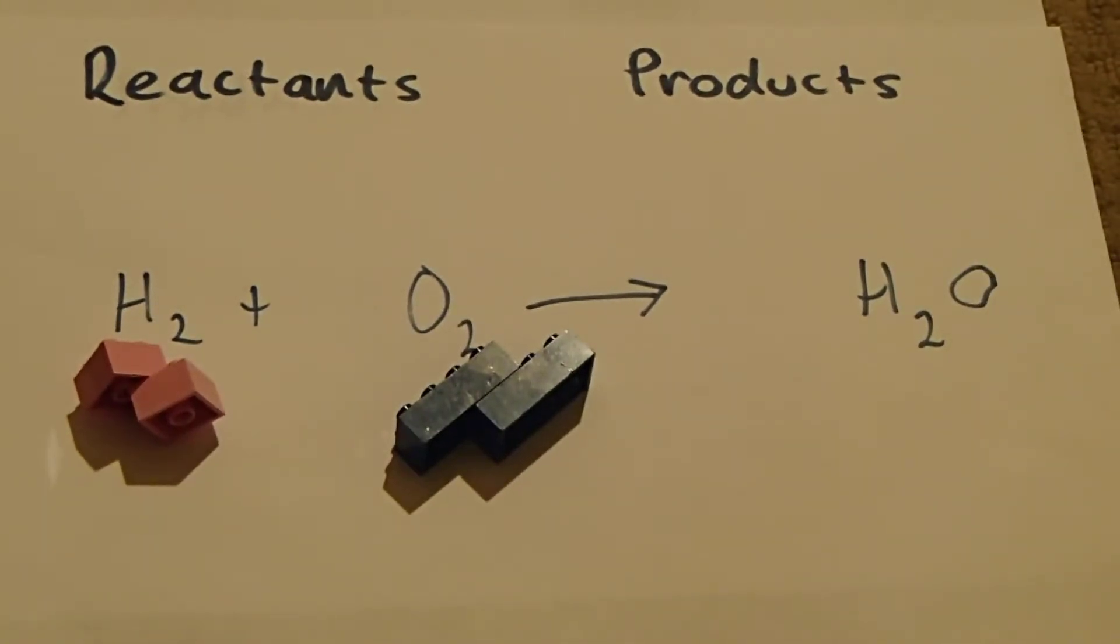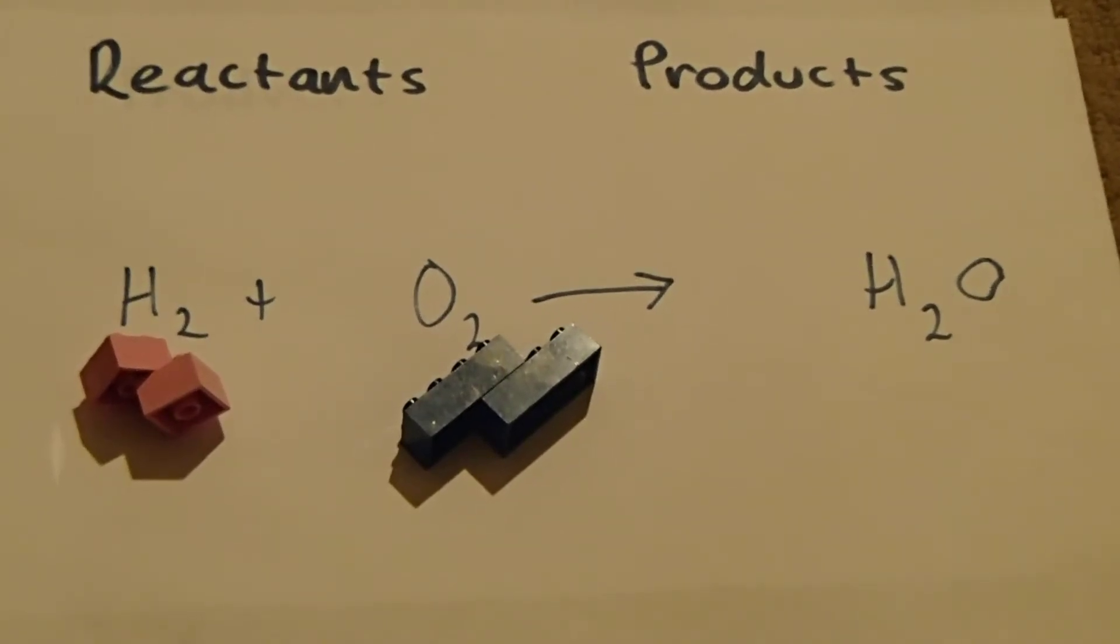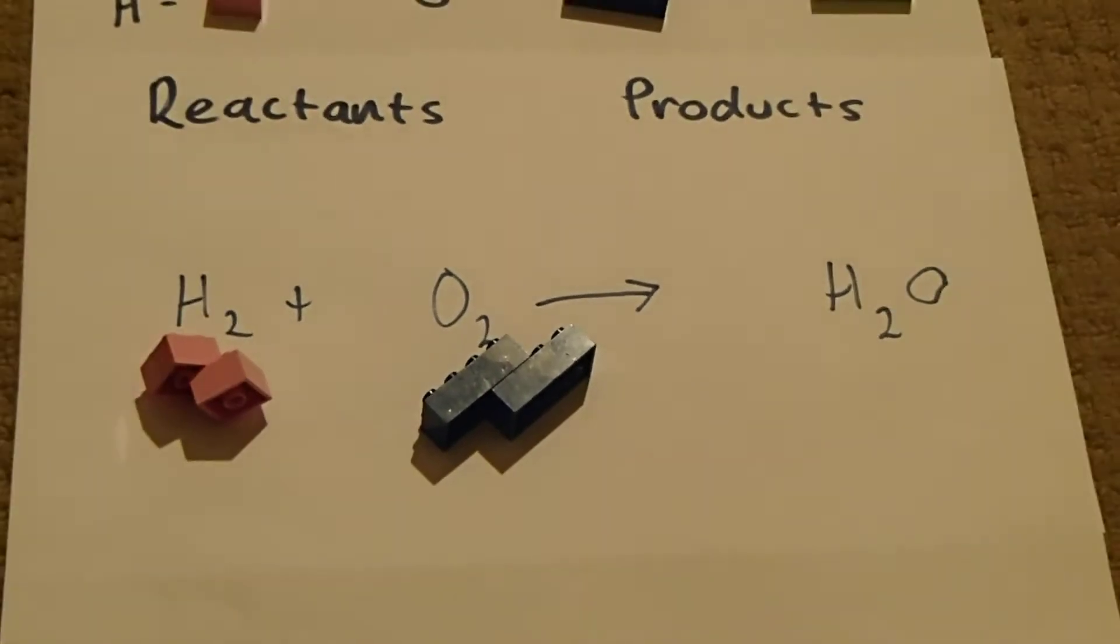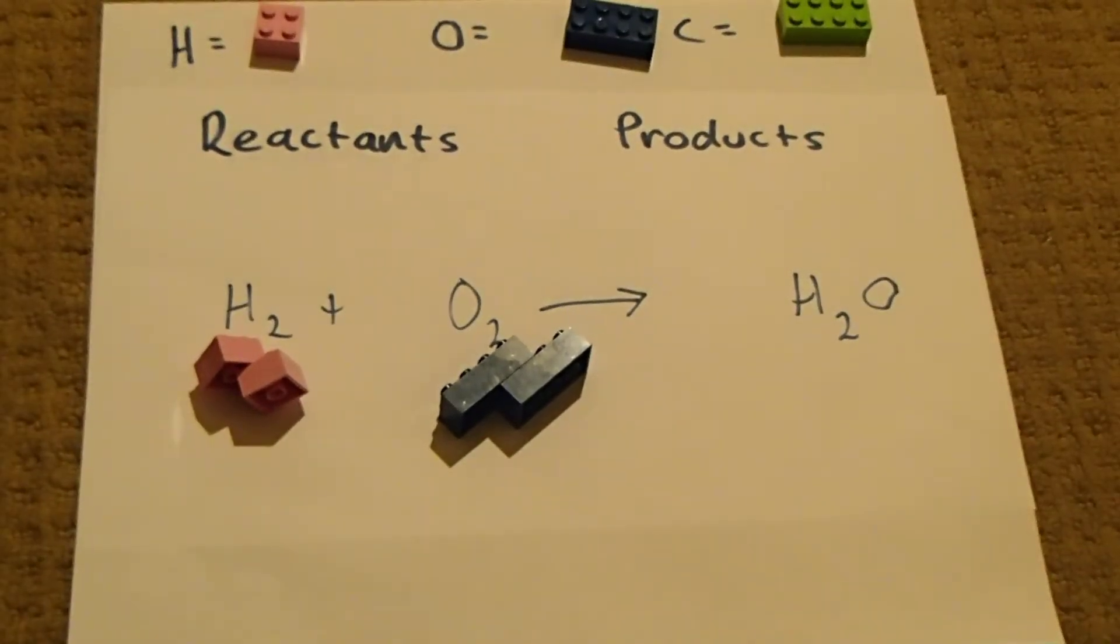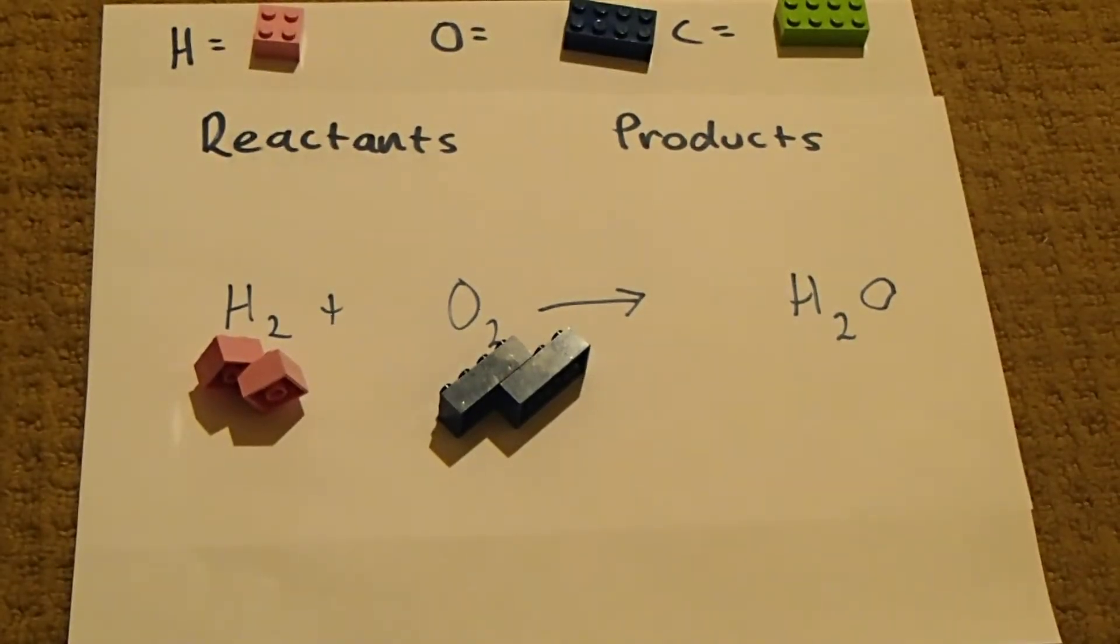Hi guys, Mr. Kerr here again. We are modeling today Prac 6.1, modeling reactions. The prac tells you to model the reactions with plasticine or clay. Now I'm at home doing this at the moment, of course you guys are at home as well, so we need to improvise. I don't have clay, so instead I'm going to use Lego.